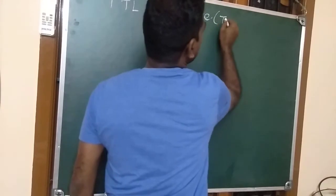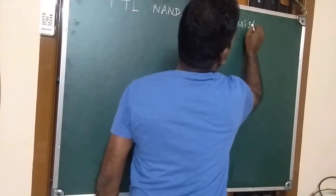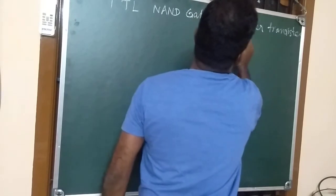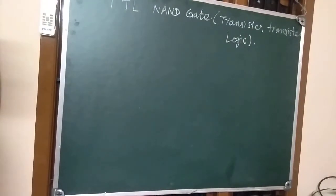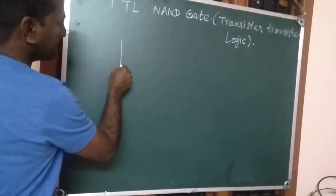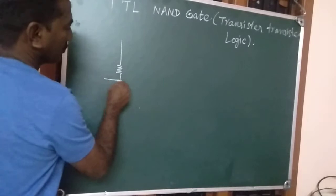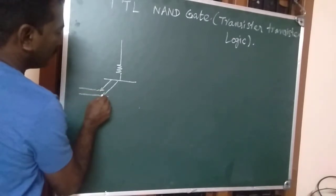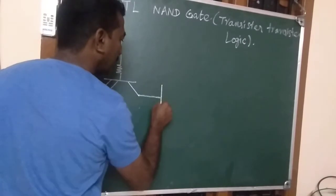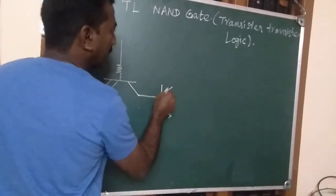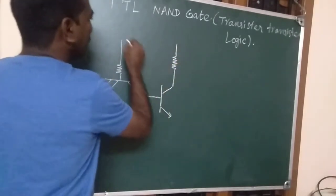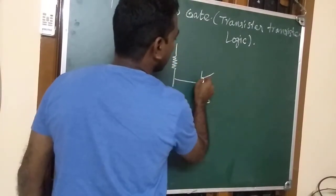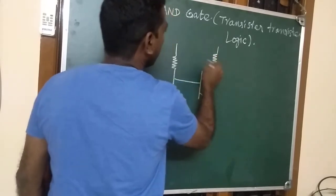TTL means transistor-transistor logic. The circuit consists of only transistors. You can see the circuit diagram — it has two emitters, another transistor connected with a resistor in the collector terminal, and again one transistor, which also has a resistor in the collector terminal.